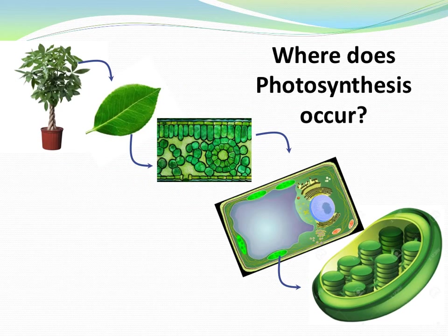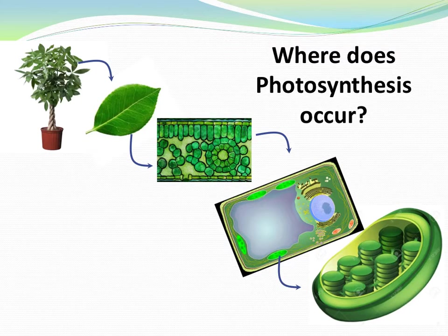So consider this potted plant. Now zoom into just one leaf. Now go deep into the leaf tissue. The tissue of course is just a bunch of cells, so zoom into a cell. And finally in this plant cell, consider one single chloroplast.